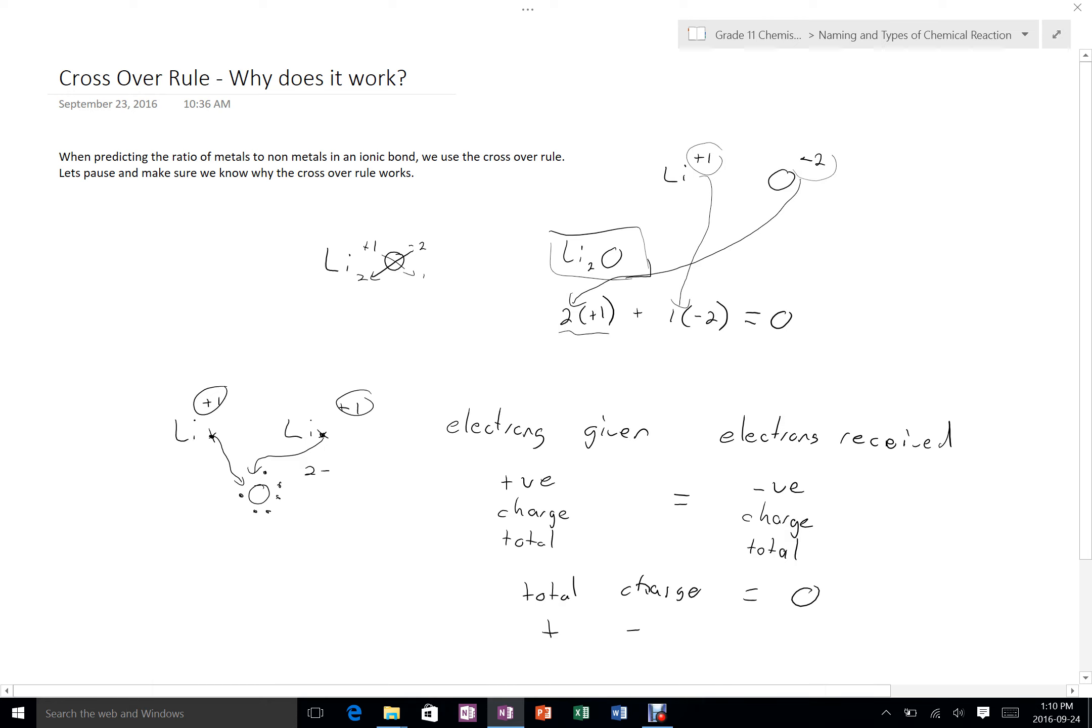And when we consider that, what we can see then is that to predict the number of each atom, what we've done is we've crossed over the charges. So that when we multiply this number to this number and this number to this number, they're equal to each other. And as a result, the total, since this one's negative and this one is positive, will work out to zero.